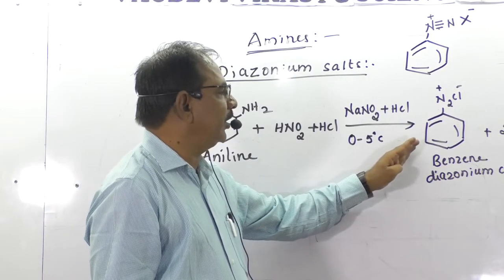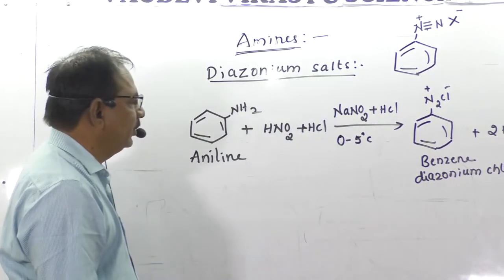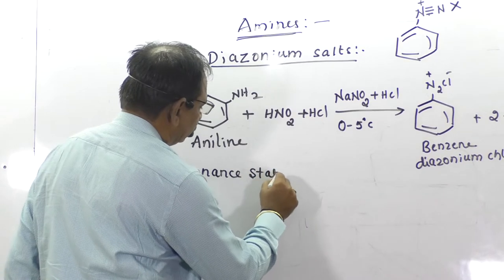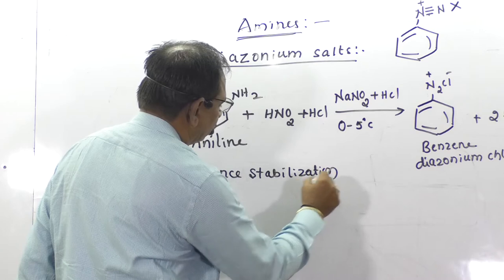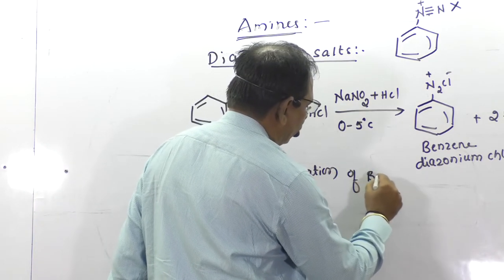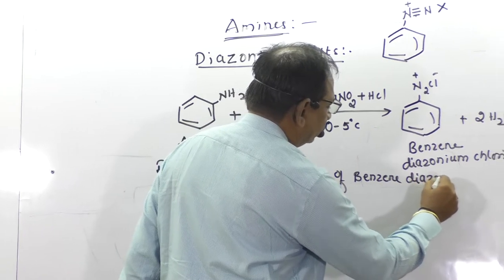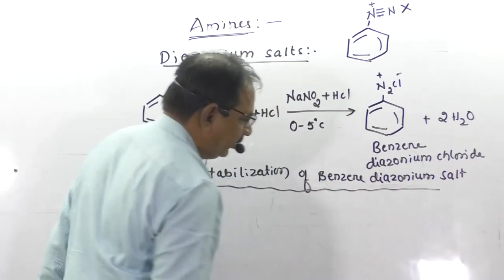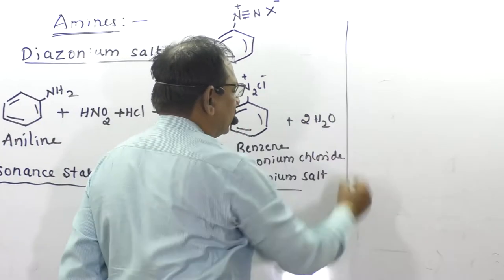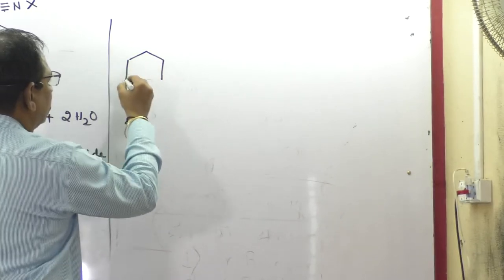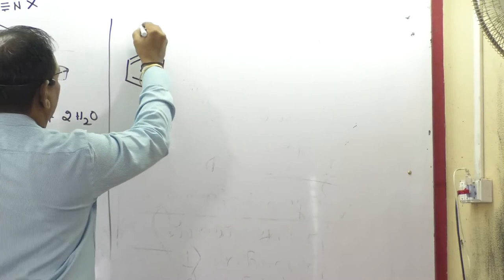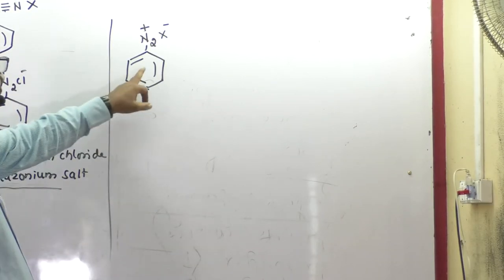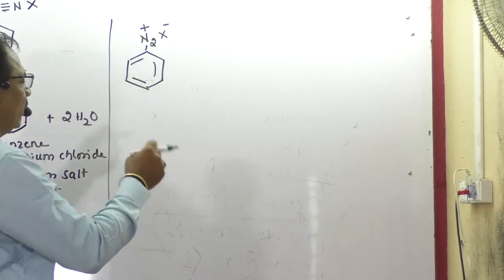This compound undergoes resonance stabilization. The resonance stabilization of benzene diazonium salt involves several resonance structures. The actual structure of benzene diazonium salt has the form ArN₂⁺X⁻, but due to resonance stabilization there are multiple contributing structures.